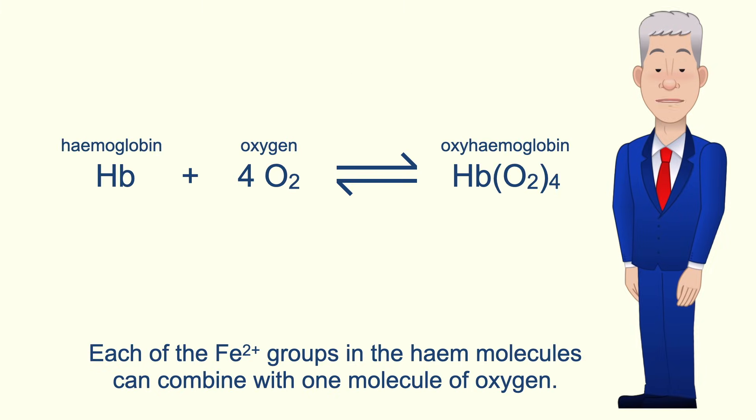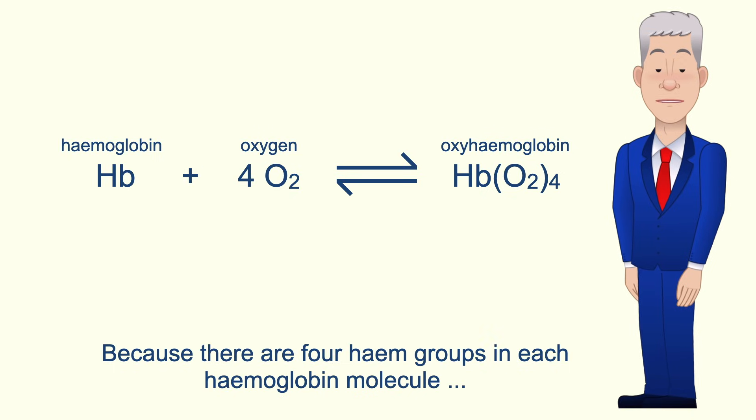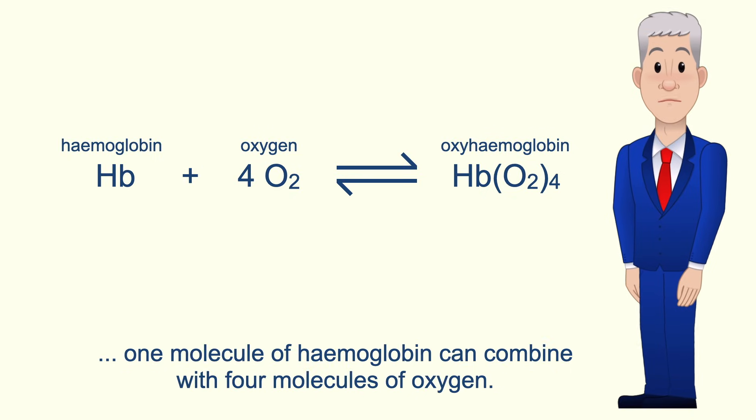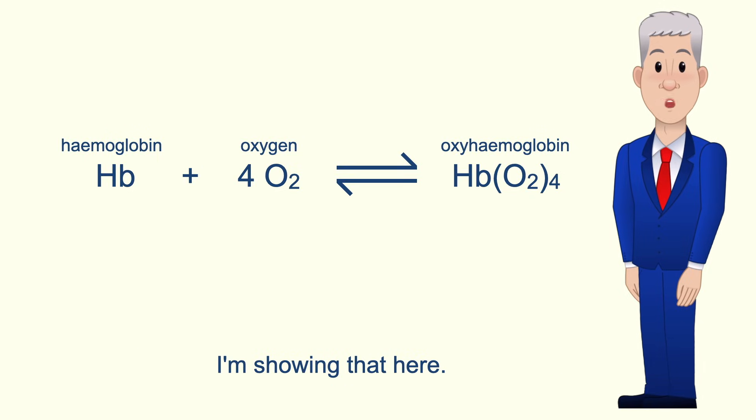Each of the Fe2+ groups in the haem molecules can combine with one molecule of oxygen. So because there are four haem groups in each haemoglobin molecule, one molecule of haemoglobin can combine with four molecules of oxygen and I'm showing you that here.